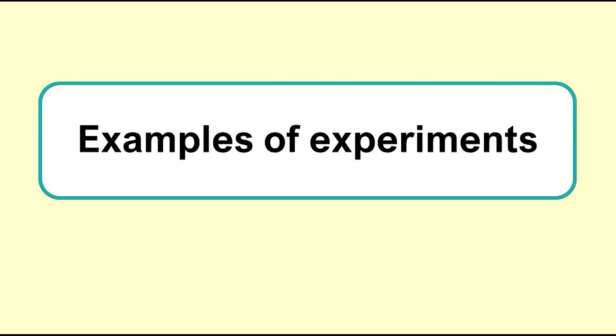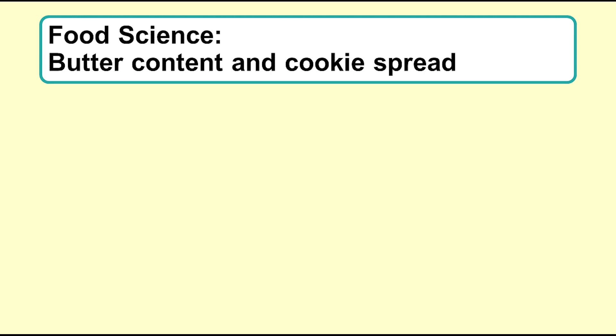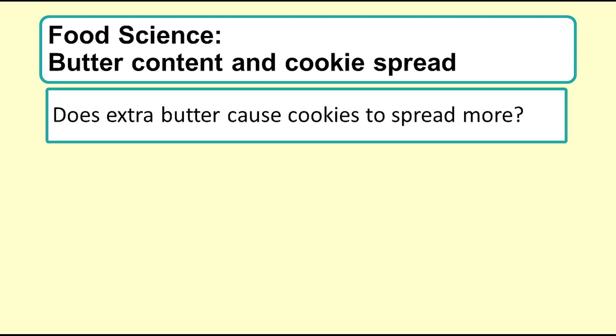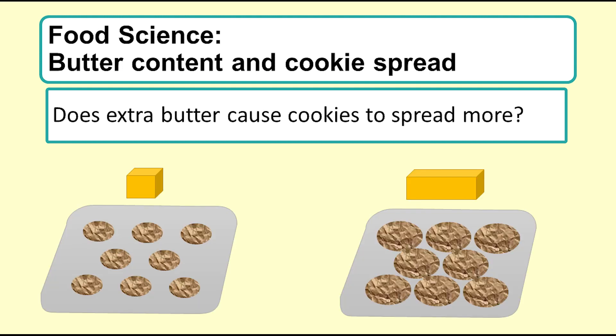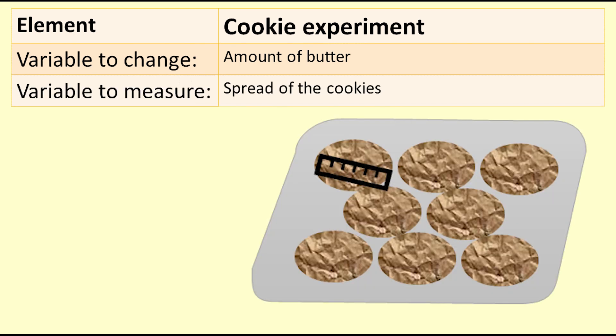I will now discuss some different examples of experiments to illustrate important principles. Food science experiment: butter content and spread in cookies. We might want to find out, does extra butter cause cookies to spread more? In this study we want to see how much the cookies spread with different amounts of butter. So we make different batches of cookies and keep everything the same except for the amount of butter, and we measure how much each cookie spreads.